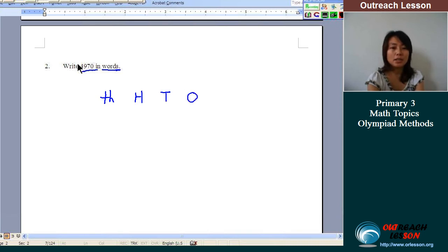So this is the number that we are going to write down in words. So we have 4, 9, 7, 0 in the table.